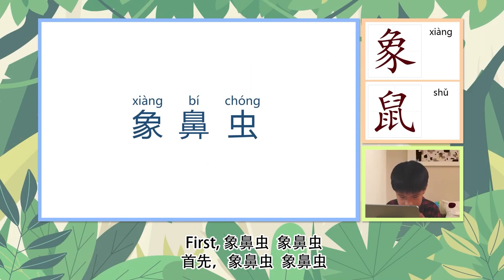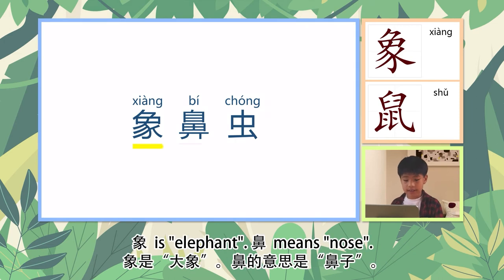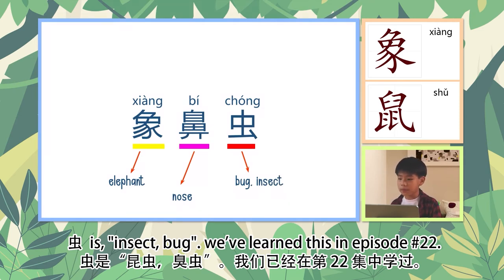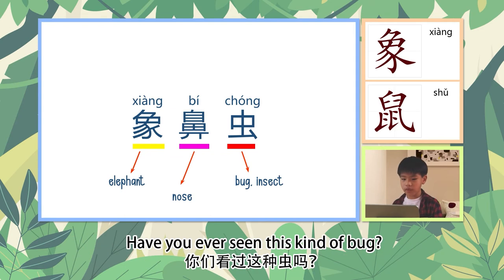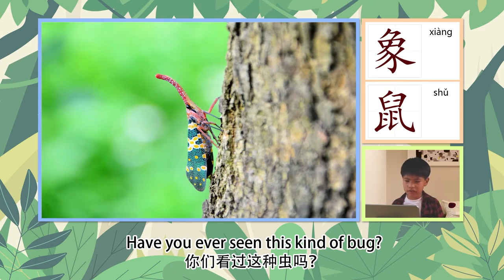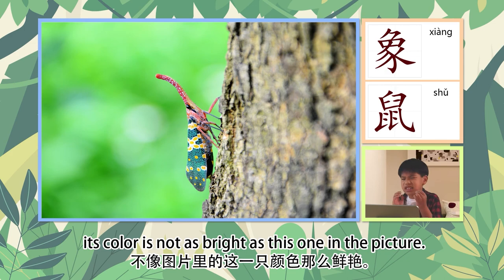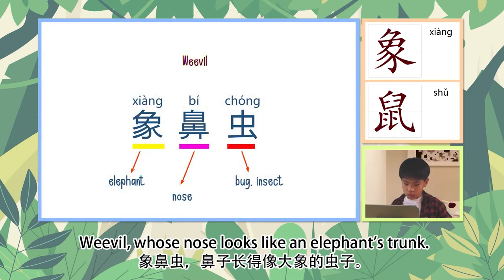象鼻虫: 象 is elephant, 鼻 means nose, 虫 is insect or bug — we learned this in episode number 22. Have you ever seen this kind of bug? I've seen a small one, but the color is black. Its color is not as bright as this one in the picture. It's called a weevil — whose nose looks like an elephant's trunk.